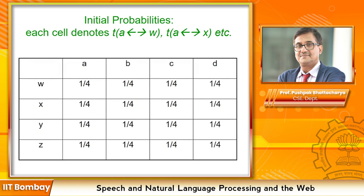The two eyes look at the same scene and two images are created on two retinas. The correspondence has to be established. This is very similar to the alignment problem in machine translation, and we would like to solve it by expectation maximization. In scene matching, many features are used, so we can make use of many features on parallel corpora also. But we are looking at raw corpus-based alignment.